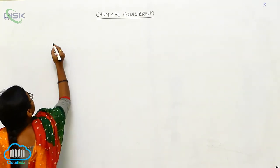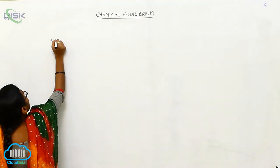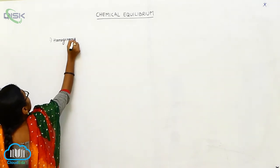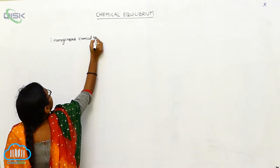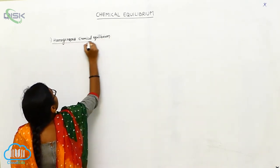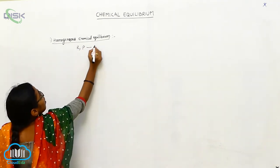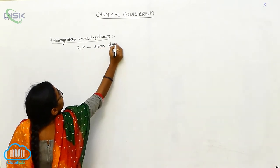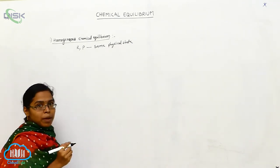There are two types. Number one: homogeneous chemical equilibrium. Whenever the reactants as well as the products are present in the same physical state, that is called homogeneous chemical equilibrium.